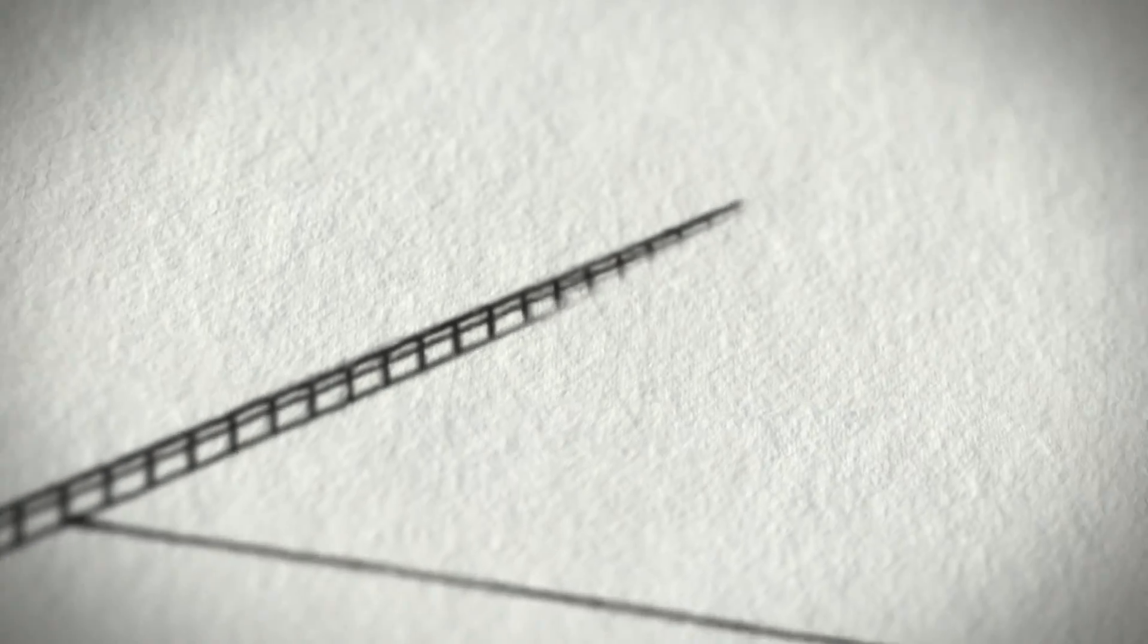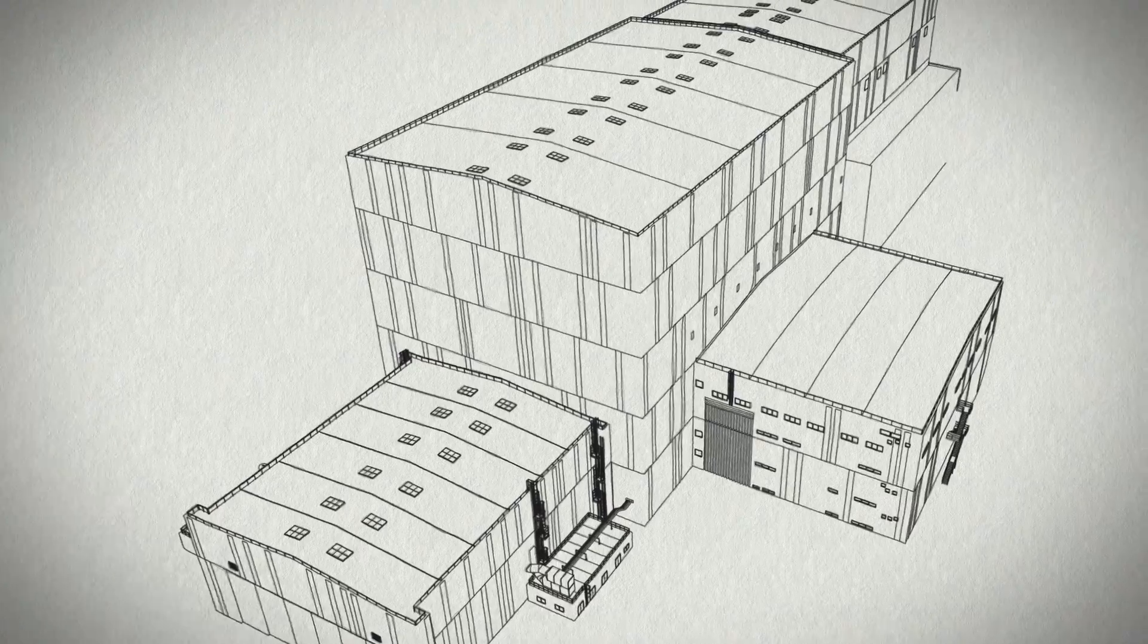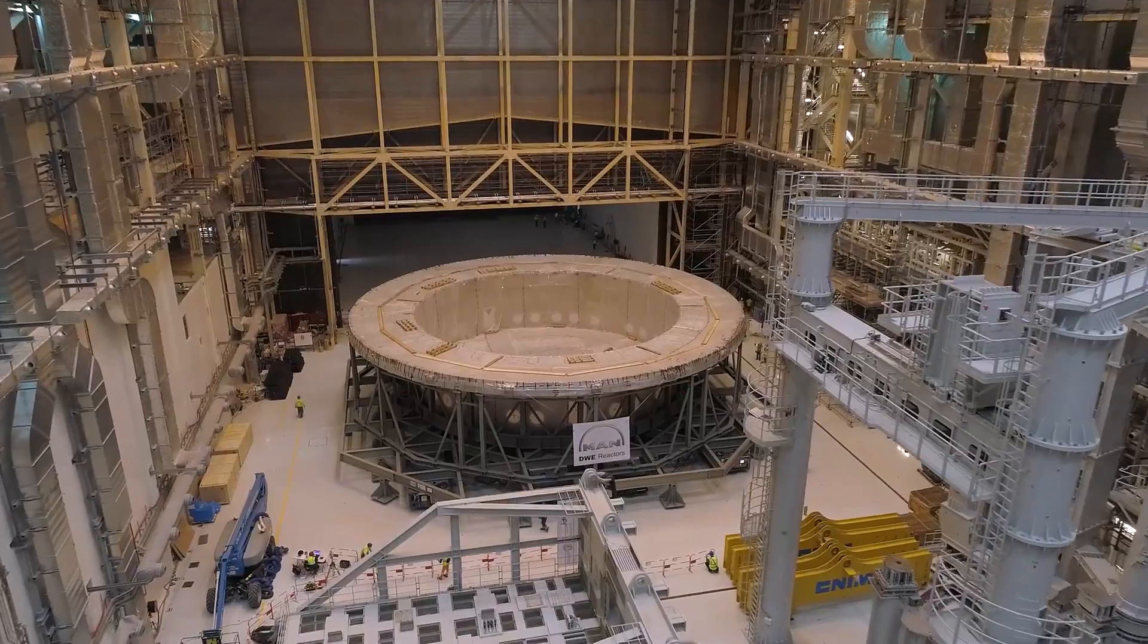In March, the European domestic agency Fusion for Energy put the finishing touches on ITER's assembly theatre. A vast hall for preparing, then installing, machine components.